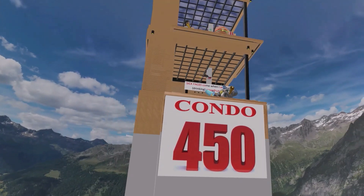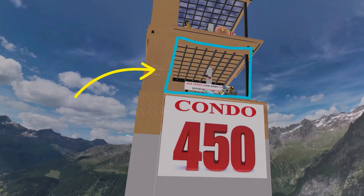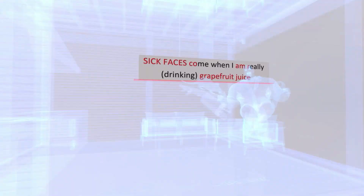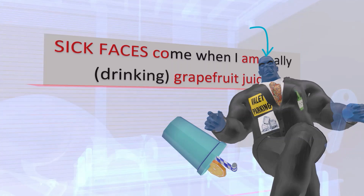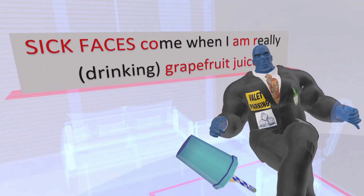Welcome to Condo 450, where we're going to learn about cytochrome P450 inhibitors and inducers. On the first floor of this condo, we see the famous mnemonic for the cytochrome P450 inhibitors: 'Sick faces come when I'm really drinking grapefruit juice.' This guy on the first floor was just drinking grapefruit juice and got really sick.